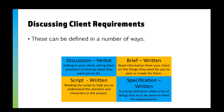Client requirements can be defined in several ways. A verbal discussion means you talk to your client, ask questions, and find out what they want. A written brief means you read information about everything your client wants you to plan or create. A written specification is a precise definition — a list of everything that must be done to meet the requirements. You might also be given a script for an animation or film, where reading it helps you understand the storyline, characters, and the project.